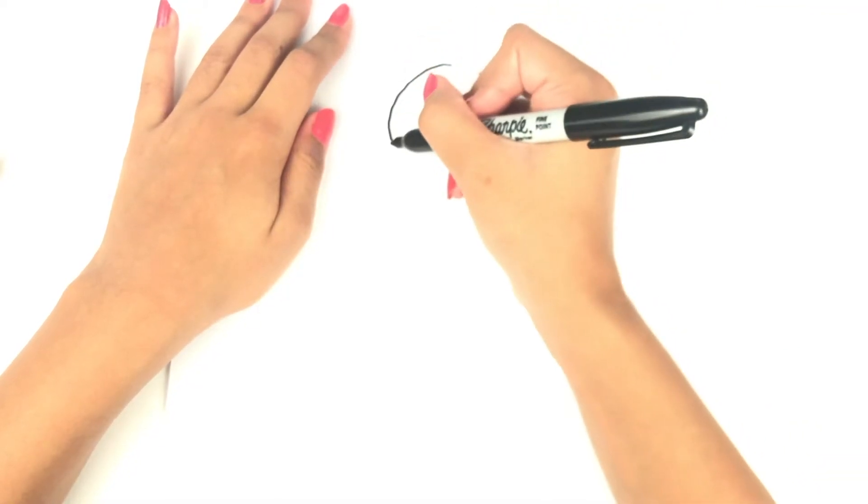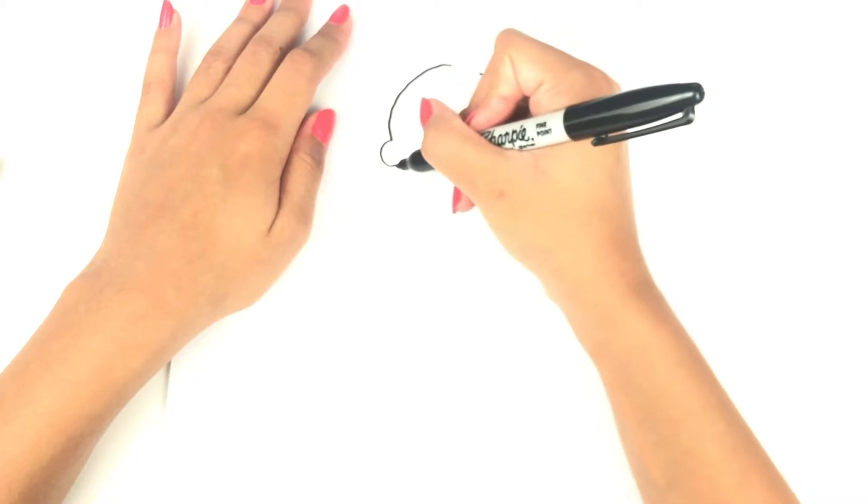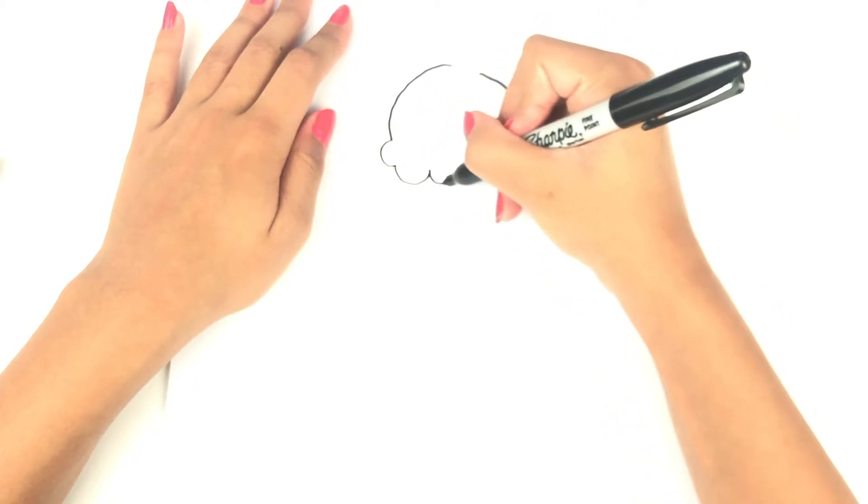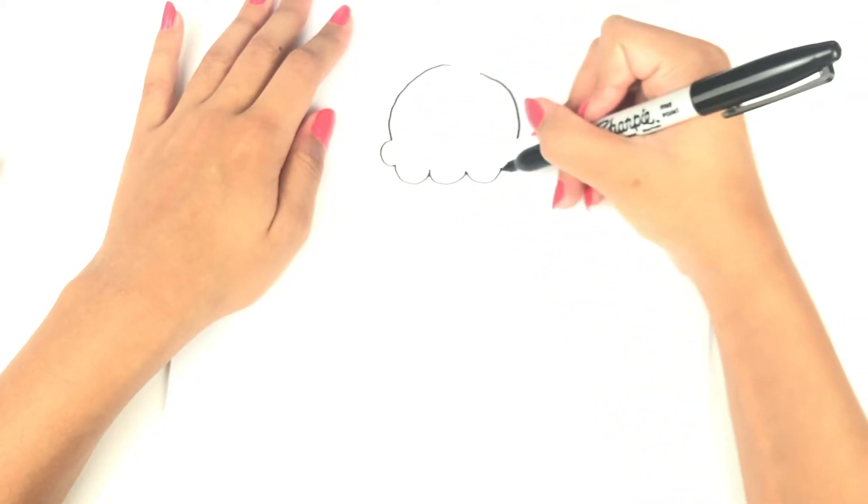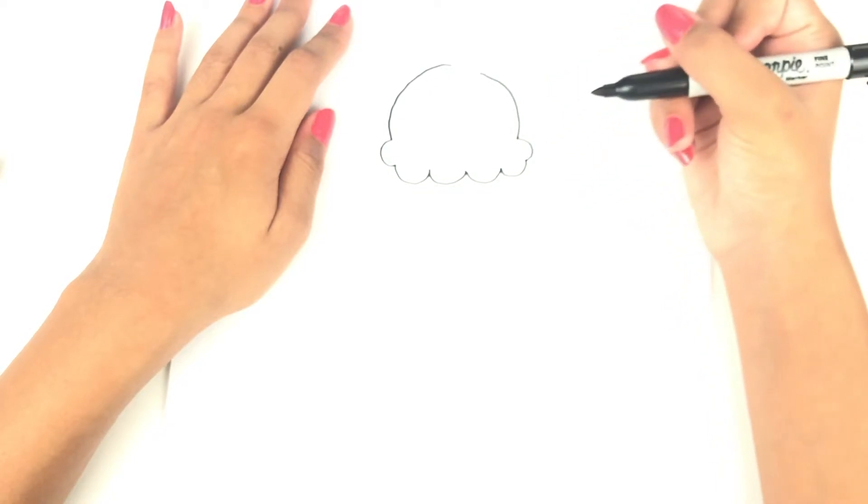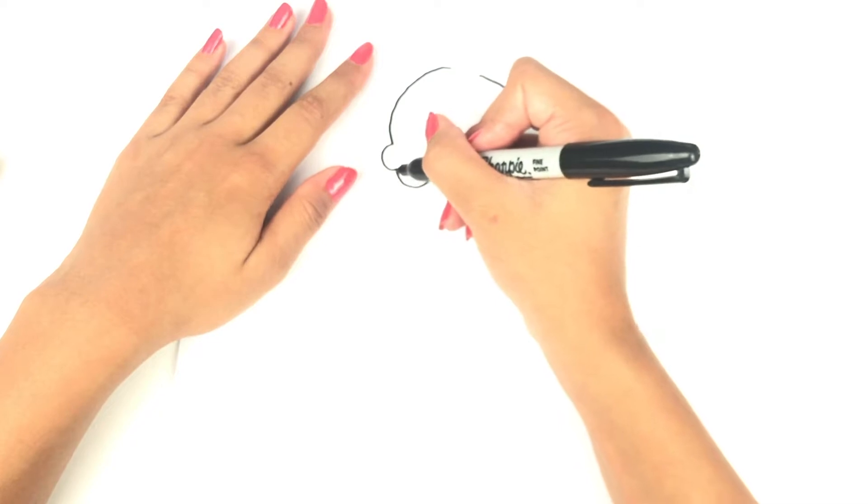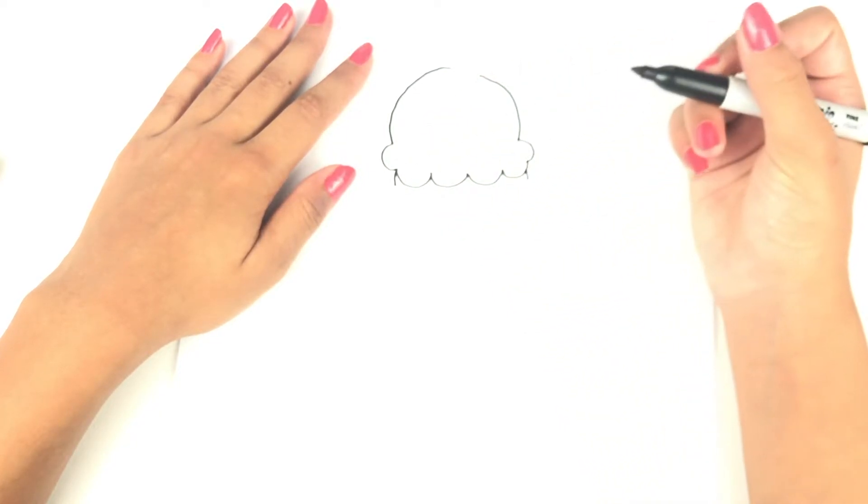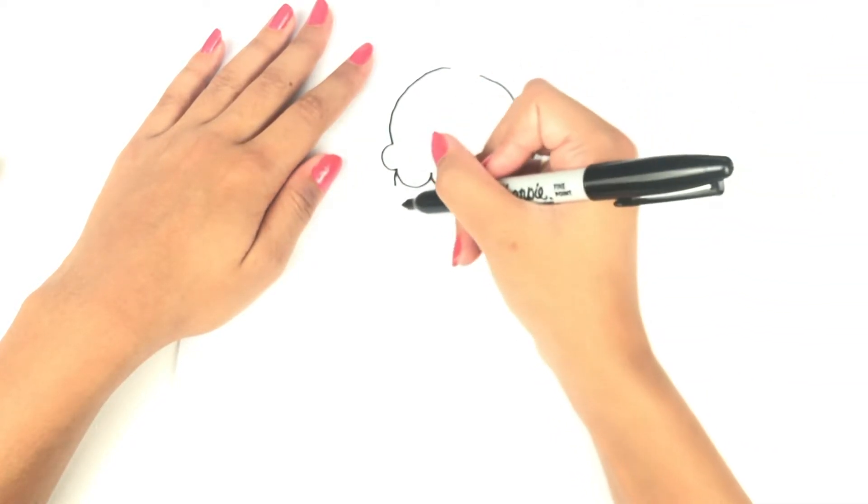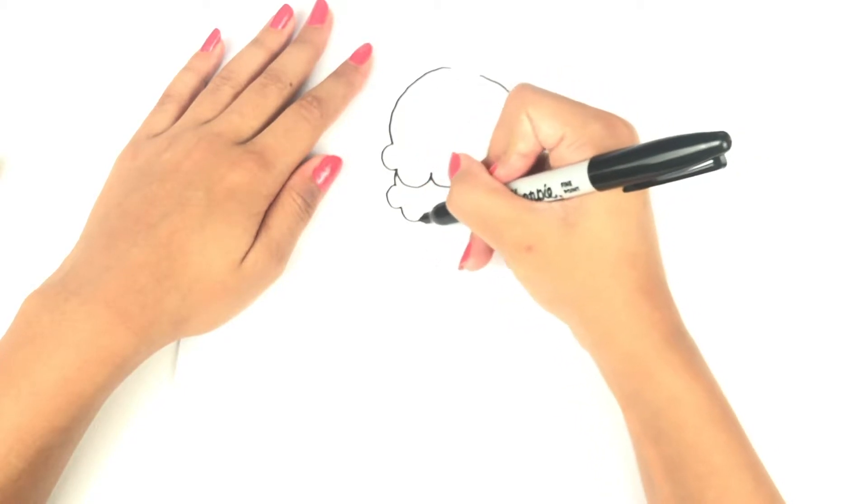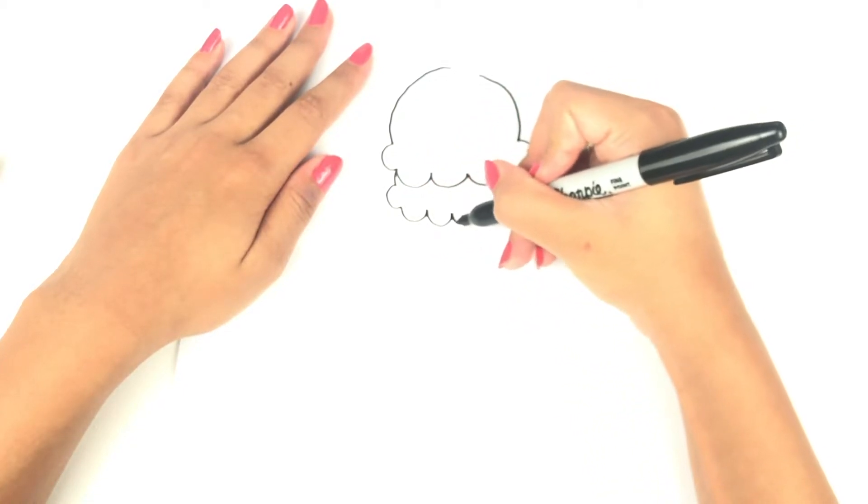Then we're going to do something like connecting W's just like I am right now. As soon as this is done, we're going to do two curved lines on each side, and then connecting the rest of the W's for our second scoop of ice cream.